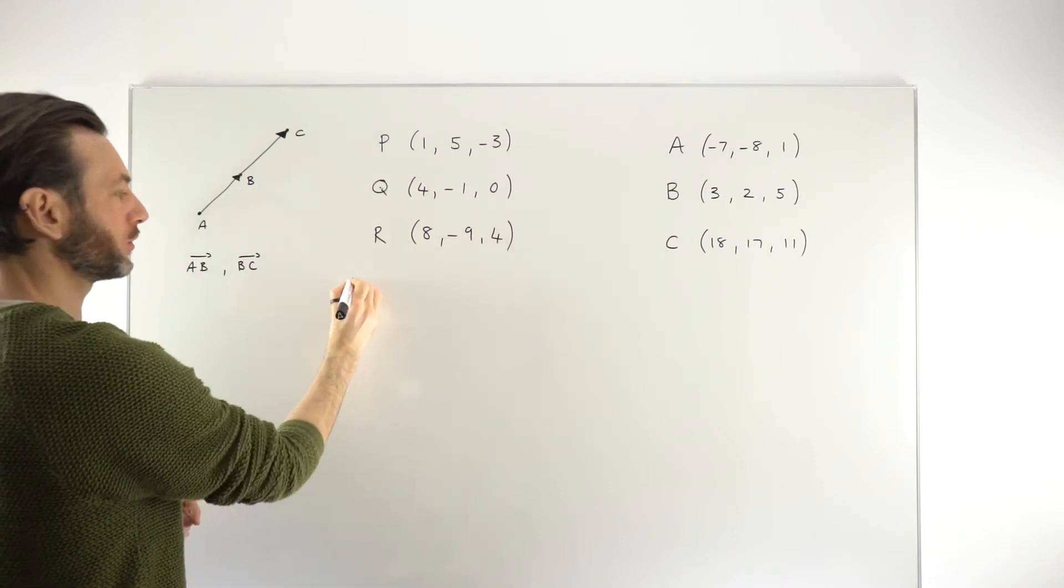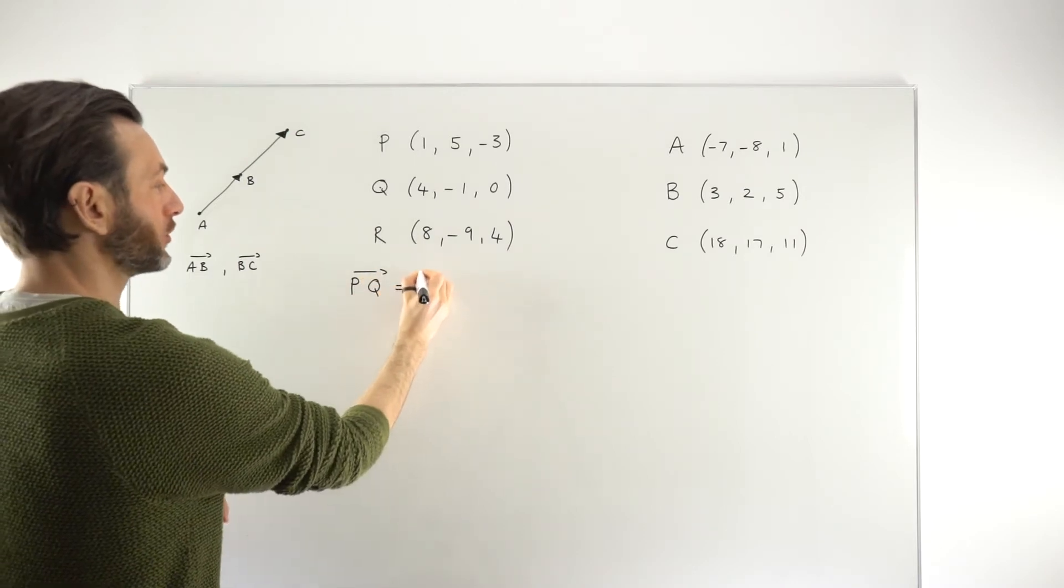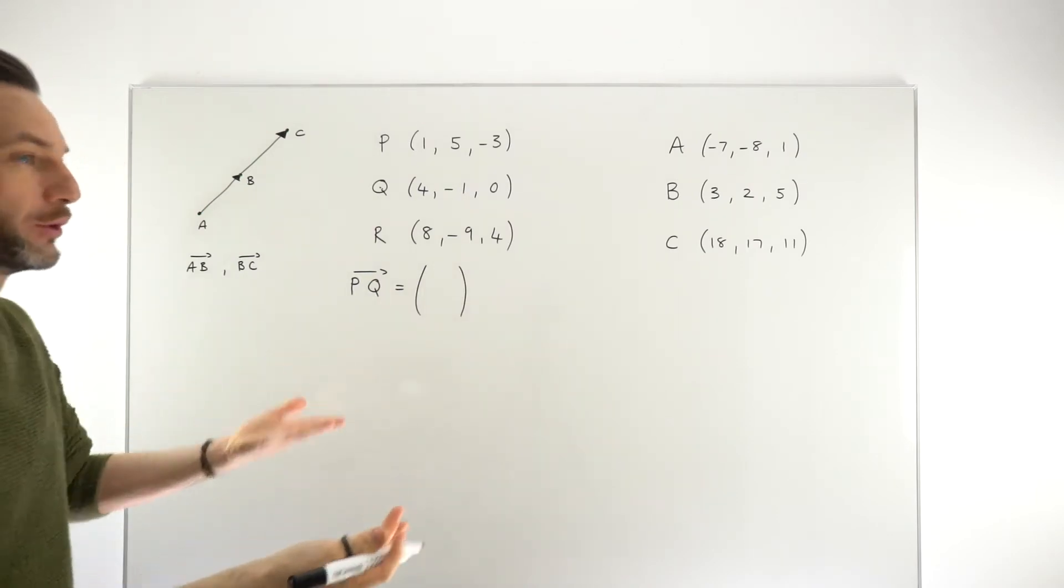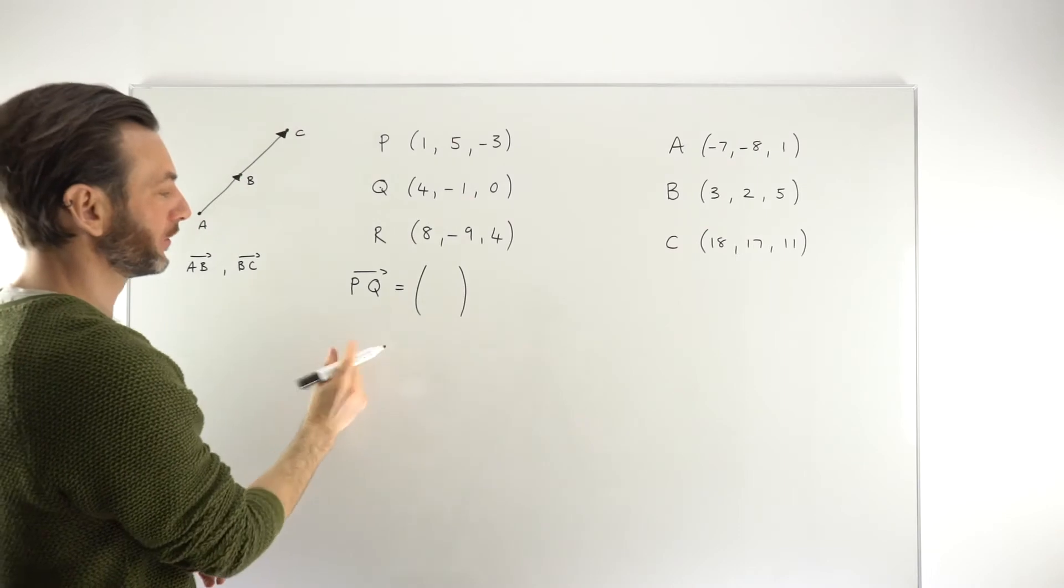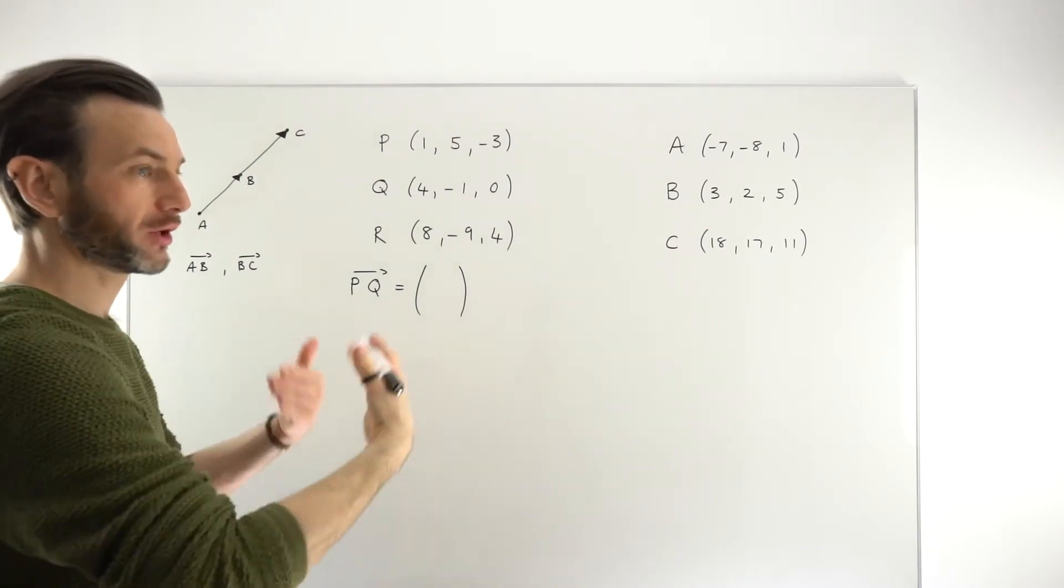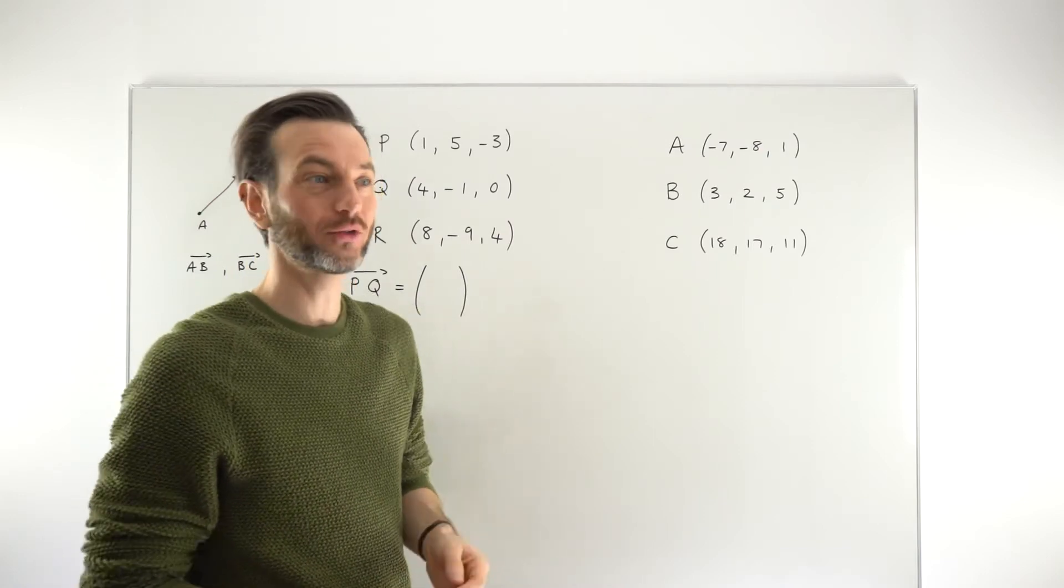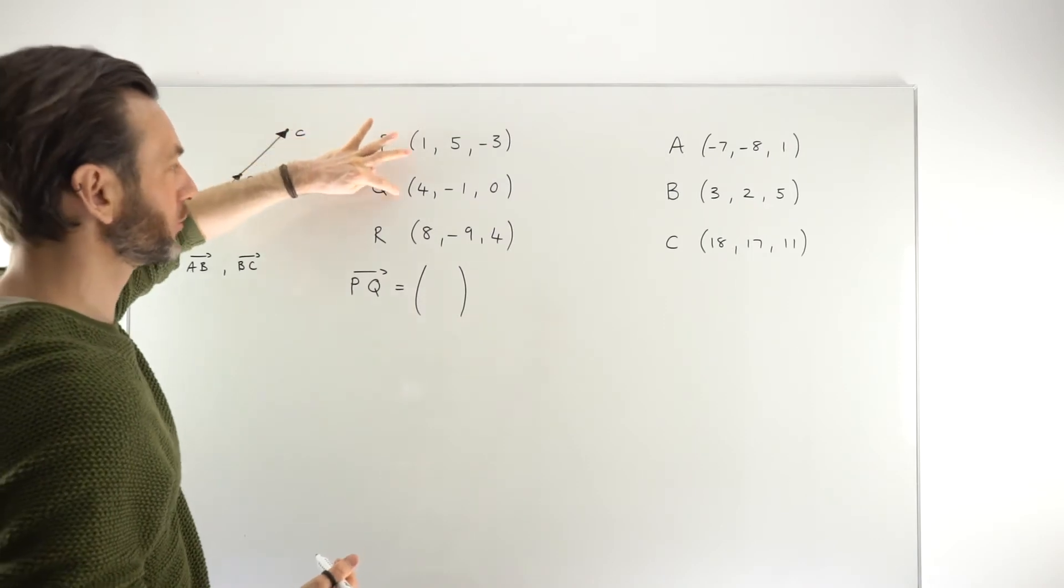How you construct your vectors will really depend upon how you've learnt vectors when you first learnt vectors. There's different ways to construct a vector. Just remember, though, that the vector PQ means you're starting at point P and going to point Q. Vectors are essentially a set of directions from one point to the other. So my preferred method here would be start at point P and go to Q.